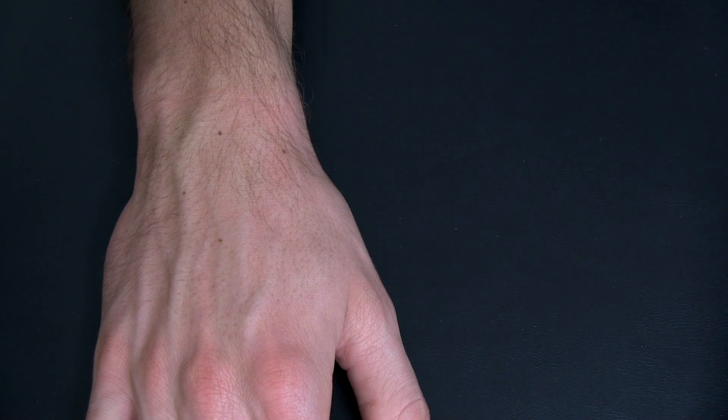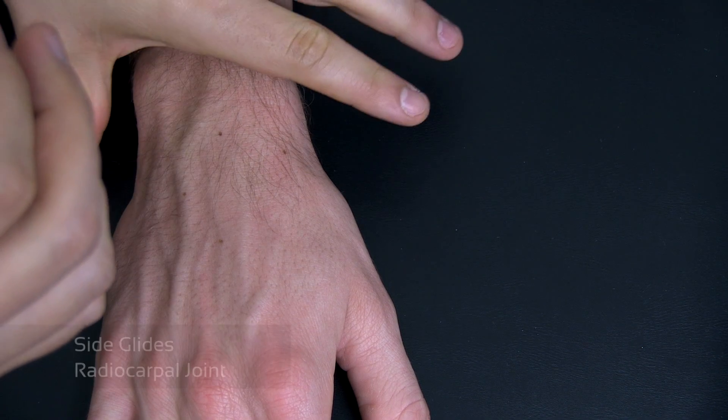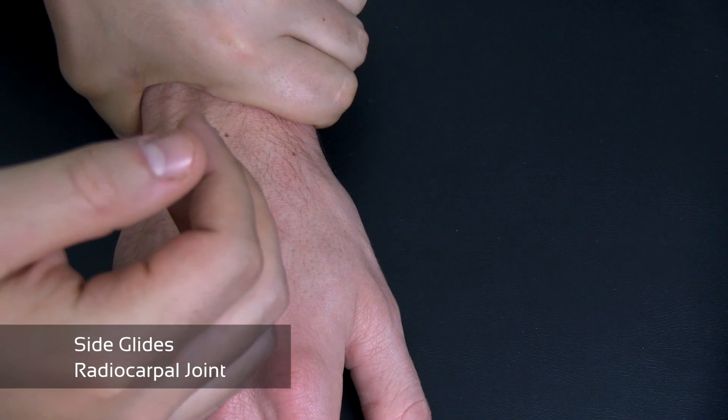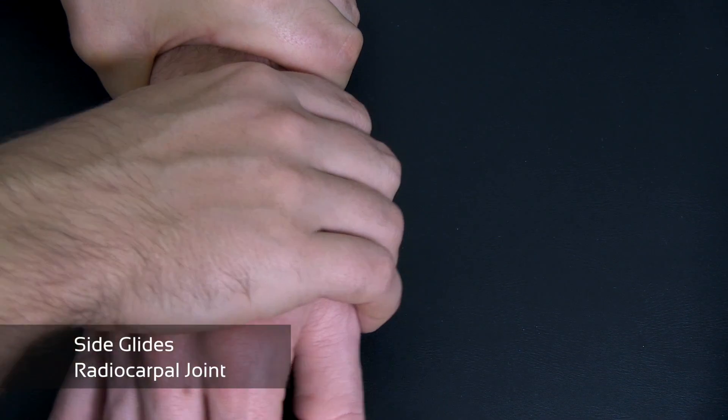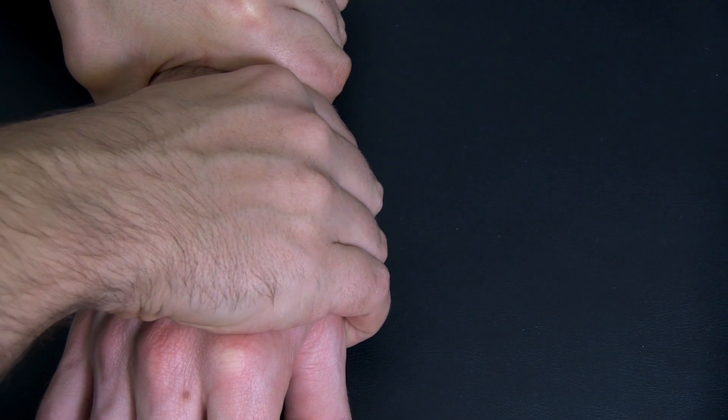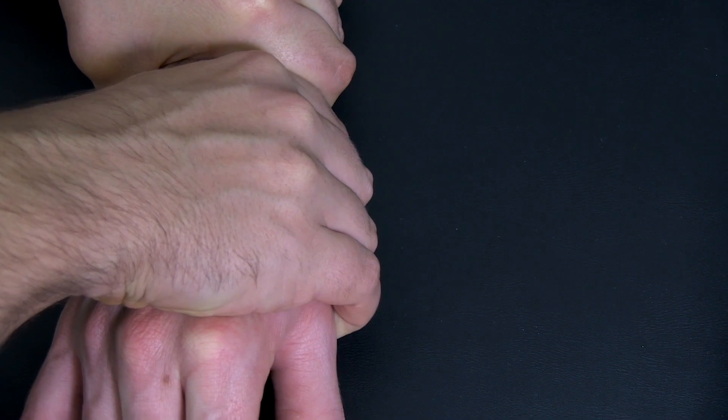Lastly, we can do side glides both at the wrist and at the fingers. So the fixation is again the distal forearm, and then the moving hand is going to grab the proximal row of the carpal bones, and you're going to move medially and laterally.